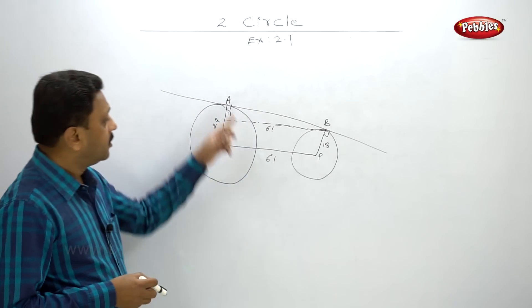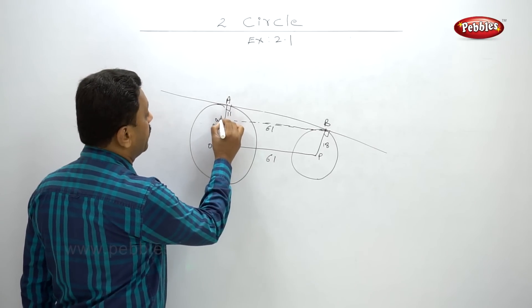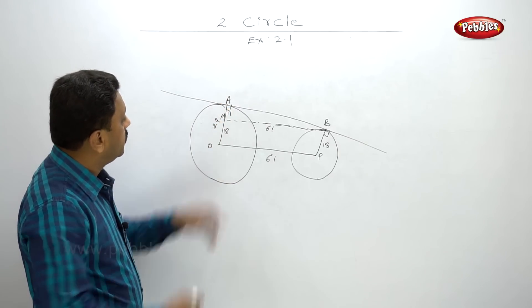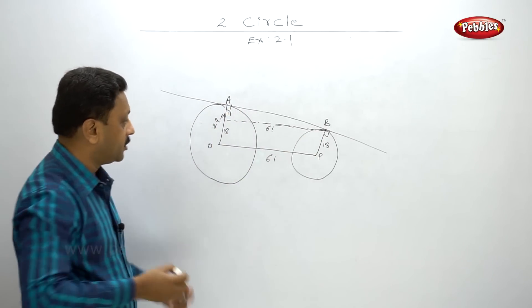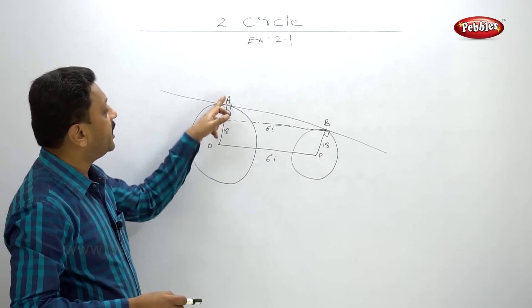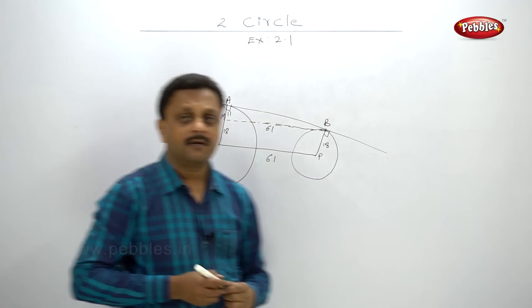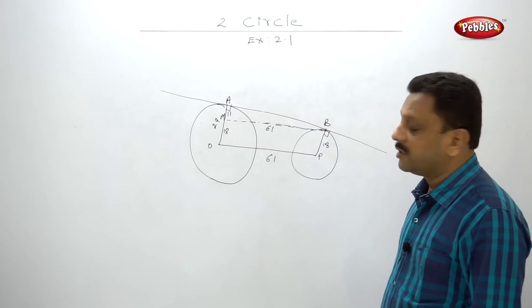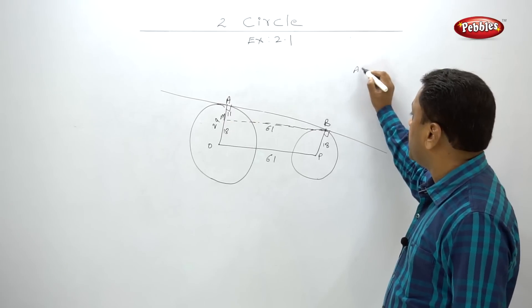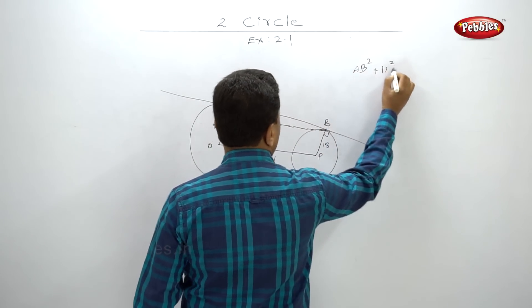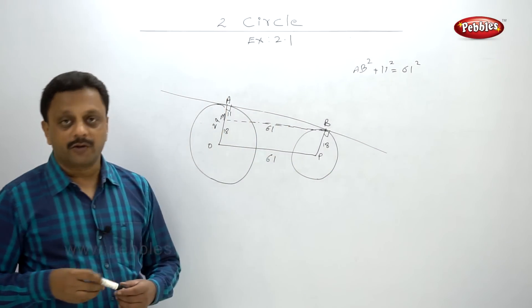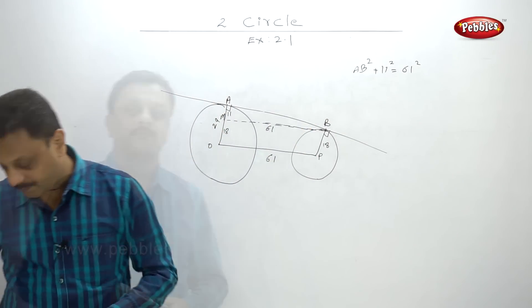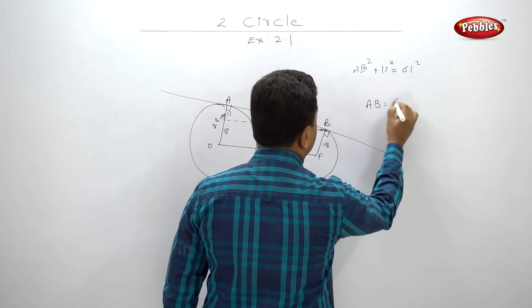Triangle AMB has a right angle, with hypotenuse MB equal to 61 and base equal to 11. By Pythagoras theorem: AB squared plus 11 squared equals 61 squared. Please pause your video and find the value of AB. The answer is AB equals 60.